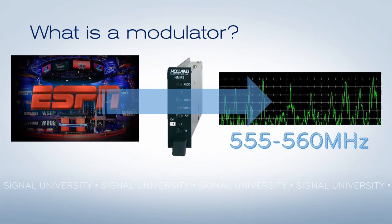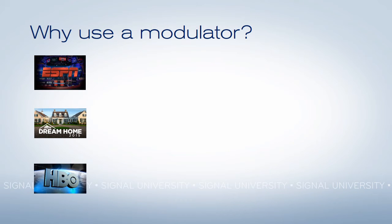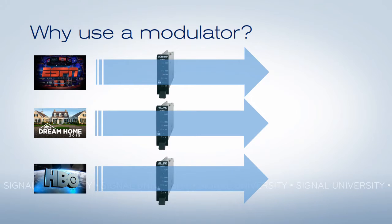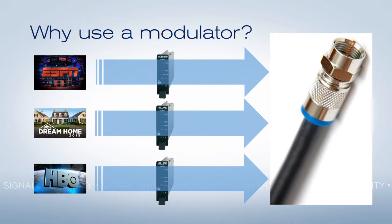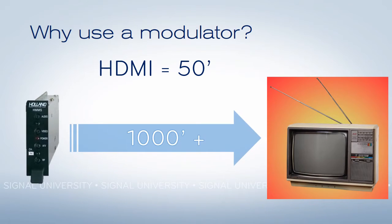Why would you do this? The answer is simple, because you can have multiple video sources, feed them through multiple modulators, and put them all on the same wire. If you didn't have modulators, you'd have to change wires every time you wanted to change channels. Not only that, HDMI cables have a limitation of only about 50 feet. Modulator systems can go a thousand feet or even more with the proper amplification. This allows you to save money in a large building.